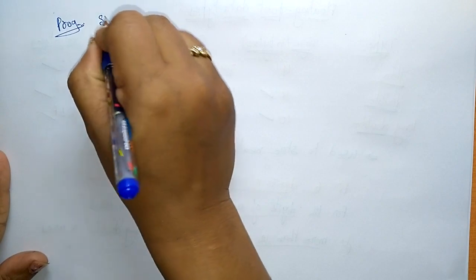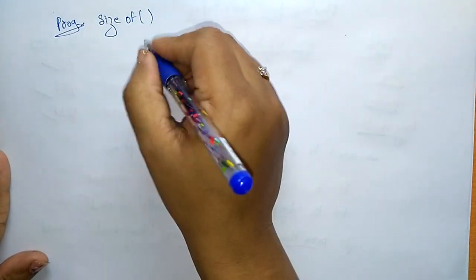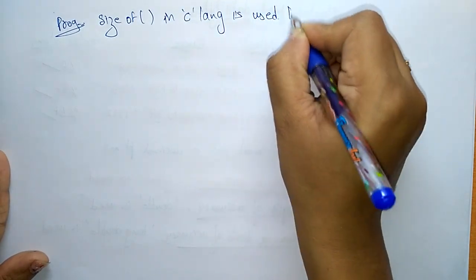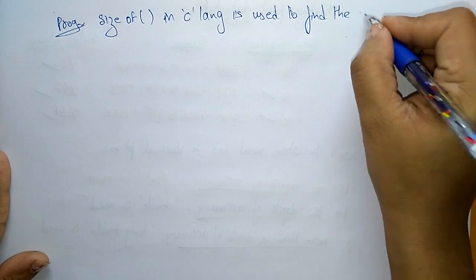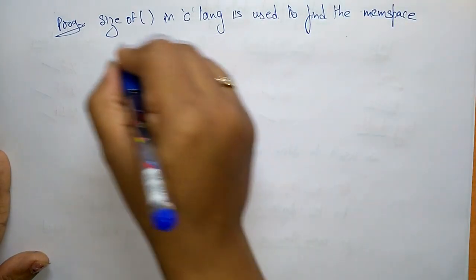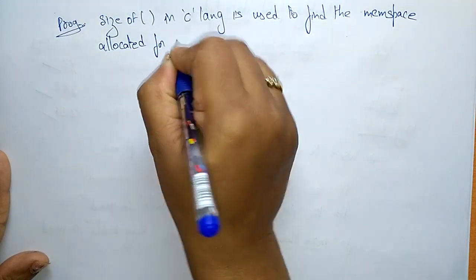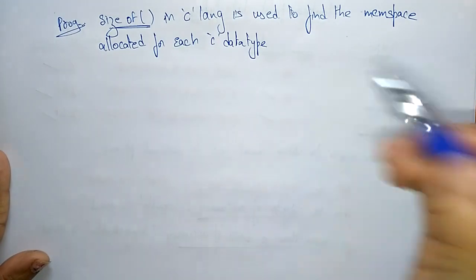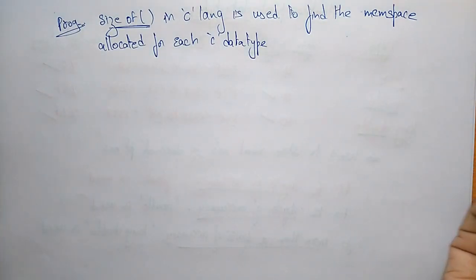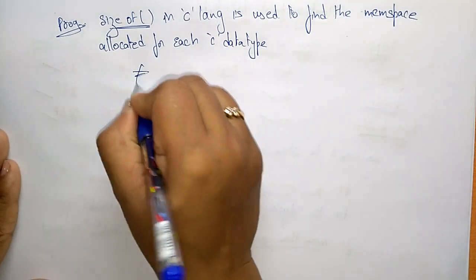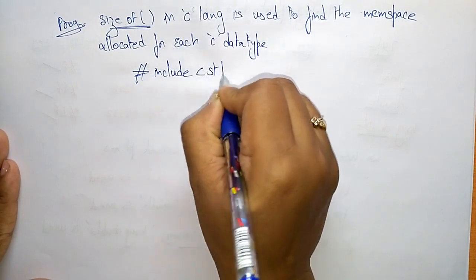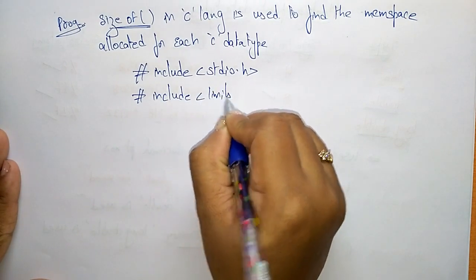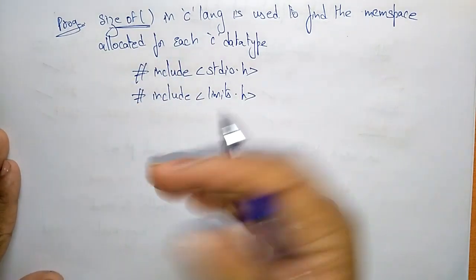Let's see the program. In this program, we are using a function called the sizeof() function. This is the sizeof() function in C language, which is used to find the memory space allocated for each C data type. We include hash include stdio.h and also hash include limits.h because we are using the sizeof() function — those definitions will be present in limits.h.